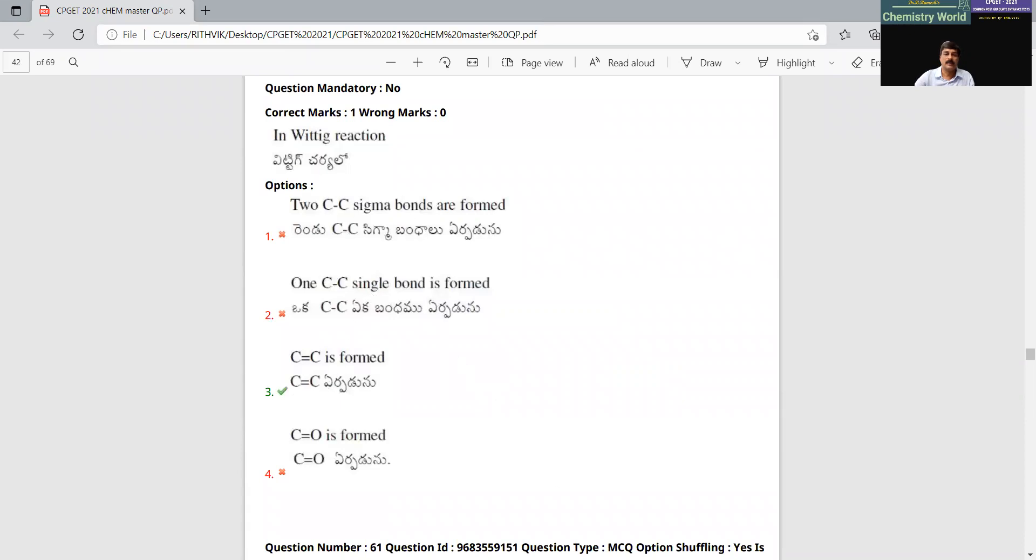In Wittig reaction, what is Wittig reaction basically? There is a double bond formation. This is what is known as a Wittig reaction. Therefore, C double bond C is formed. It is a very important name reaction.